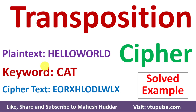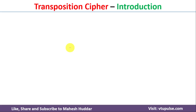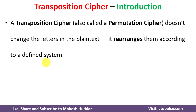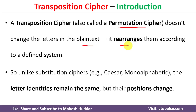Welcome back. In this video, I will explain the concept of transposition cipher with the help of a simple example. A transposition cipher is also called a permutation cipher. It does not change the letters in the plain text, but arranges them according to a defined system. Unlike a substitution cipher, in the transposition cipher, letter identities remain the same, but their positions will change.